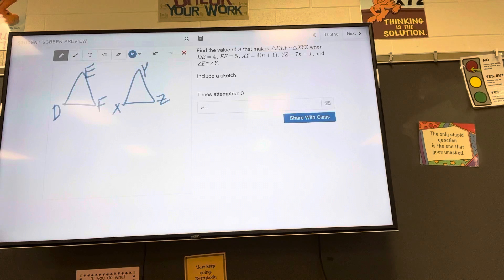Now let's take the information and put it on the diagram. DE is 4. We'll do this in a different color. EF is 5.